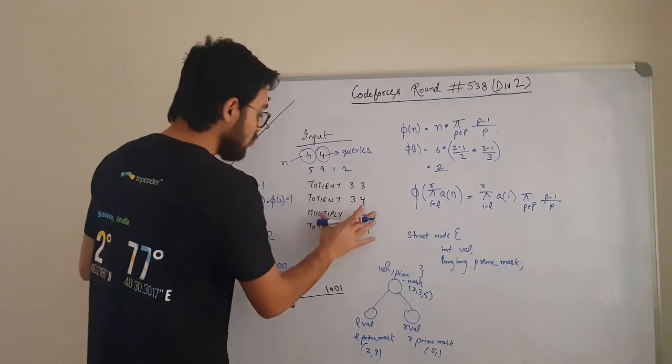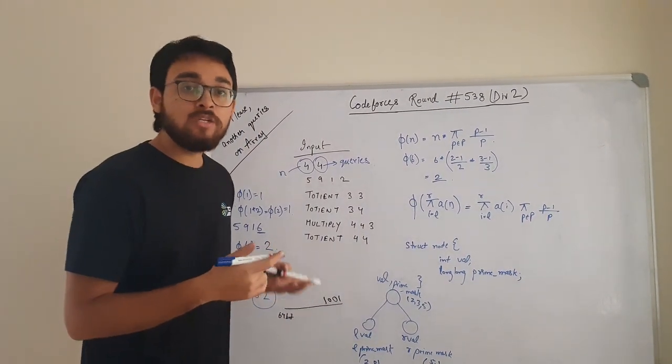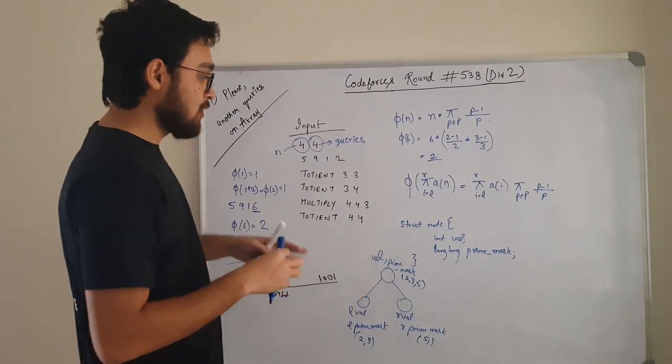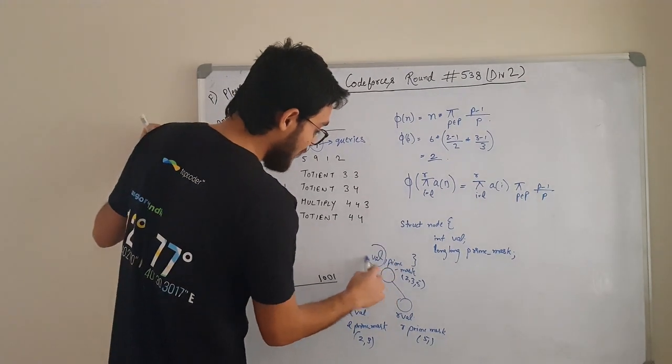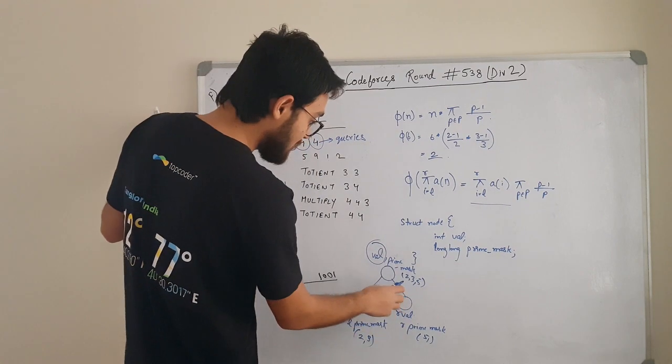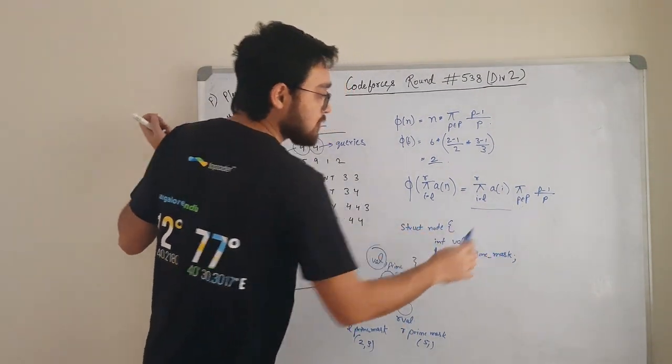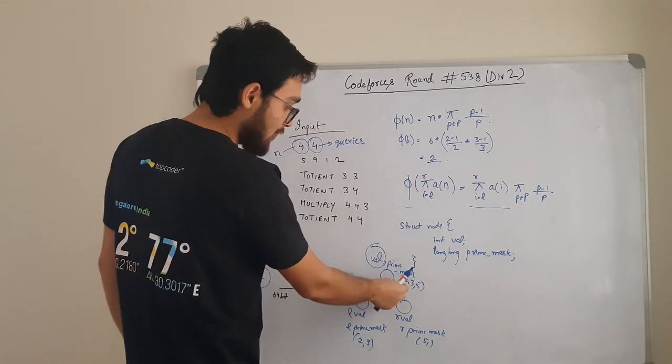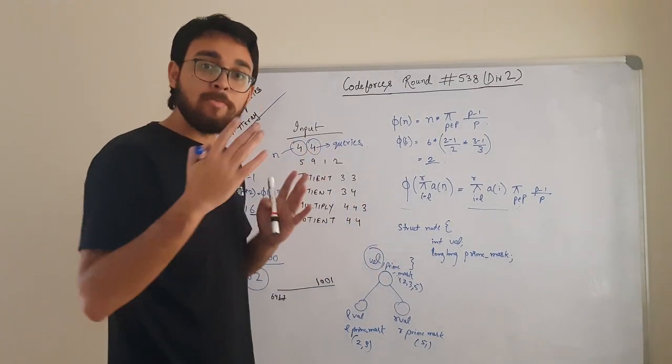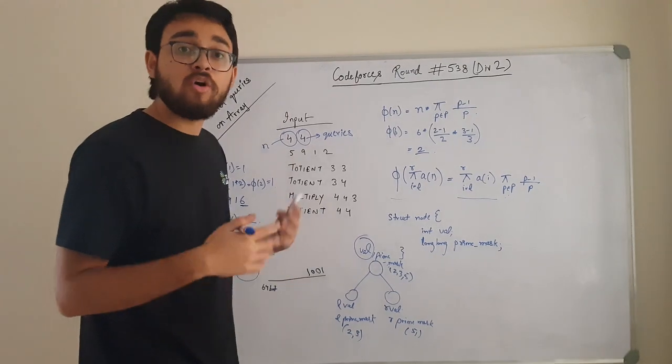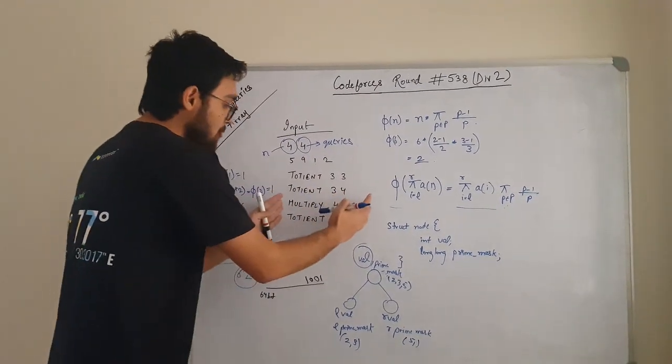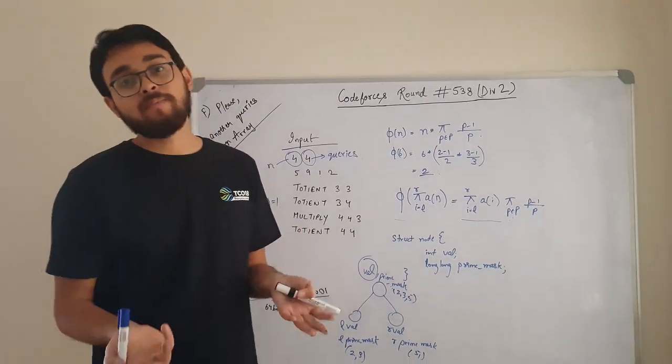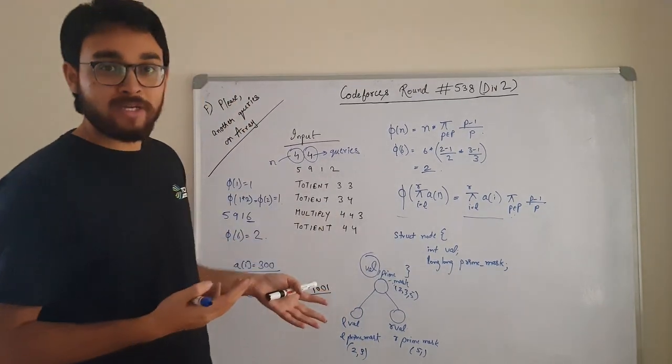But the problem is, how will you do this multiply operation? For multiply operation, you need to do range updates. If you do the range updates and apply this, then what you have got is this value is having this thing and this prime_mask is having all the primes. If you apply this formula here, like you take the value and multiply it with, you take all the primes, (p-1)/p and you keep multiplying that, you can answer each query. The only problem for now that we are having is this multiply operation. We need to do range update and if we do range update, it will result in time limit exceeded. So what we can do is, we can apply lazy propagation here.